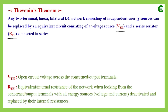VTH is the open circuit voltage across the concerned or output terminals — between the terminals where the variable component is connected. RTH is the equivalent or internal resistance of the network when looking from those terminals with all energy sources deactivated. For deactivation, voltage sources are short-circuited and current sources are open-circuited, while their internal resistances remain in the circuit.